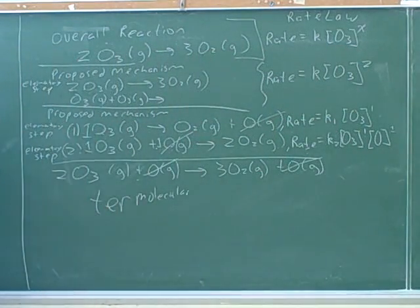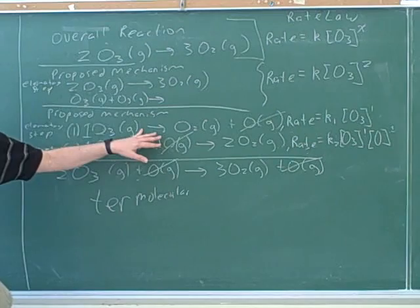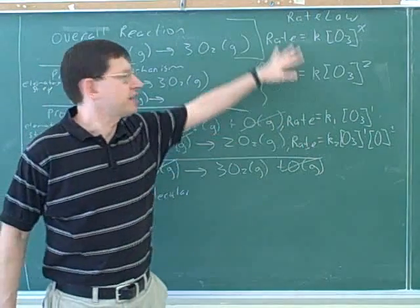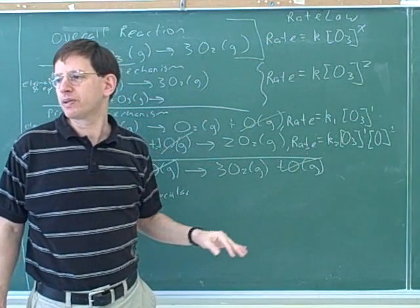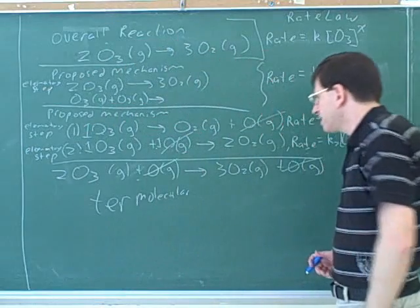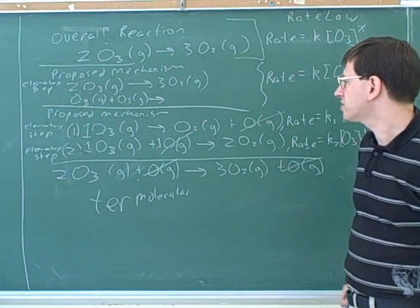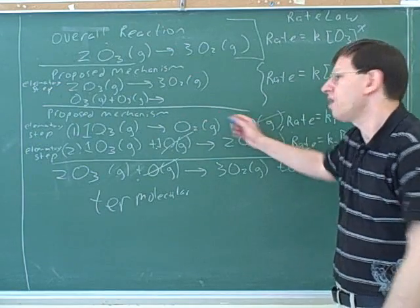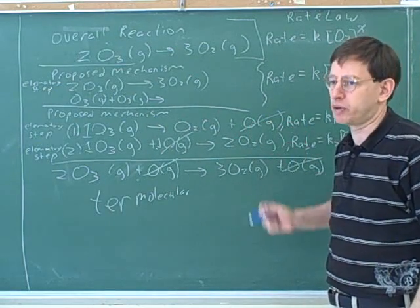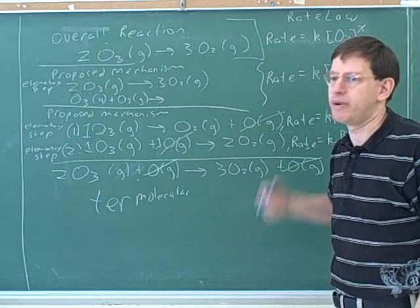And then again, we might ask, how can we tell whether this is really right? Well, we could try to test whether these rates match this. But now this is much more complicated, because we can predict what the rate of this step would be, and what the rate of this step would be, but it's not so obvious how to predict what the overall rate would be from these individual rates. That's what we're going to learn how to do today. So we're not quite ready for that yet.